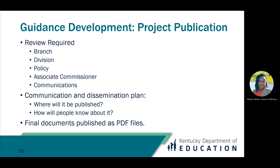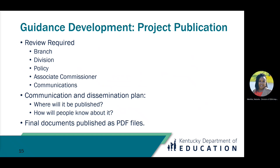Once the guidance is developed, it has to be prepared for publication. Our project publication procedures reflect the intentionality and quality we have in place to produce high-quality resources. First, a review is required — all projects are reviewed at the branch, division, and policy levels, as well as by the Associate Commissioner and through the Kentucky Department of Education Communications Office. Once approved, we have a communication and dissemination plan for where the guidance will be published and how we let people know. Finally, our documents are published as PDF files to make them easily accessible no matter what device the user is on — tablet, cell phone, or laptop.